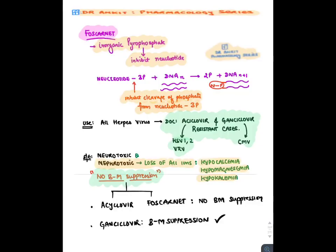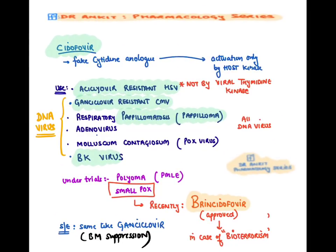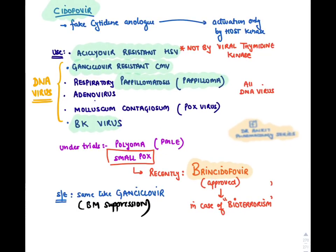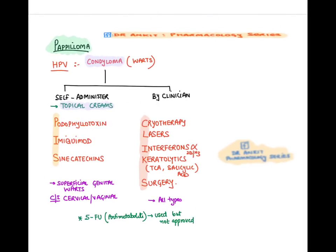Cidofovir is a fake cytidine analogue given against all DNA viruses including Acyclovir- and Ganciclovir-resistant cases. It is the drug of choice for respiratory papillomatosis caused by Papilloma Virus, and also covers adenovirus, molluscum contagiosum, and BK virus (opportunistic infection in renal transplant patients). The new modified form is Brincidofovir, recently approved for Smallpox. Like Ganciclovir, it causes bone marrow suppression.